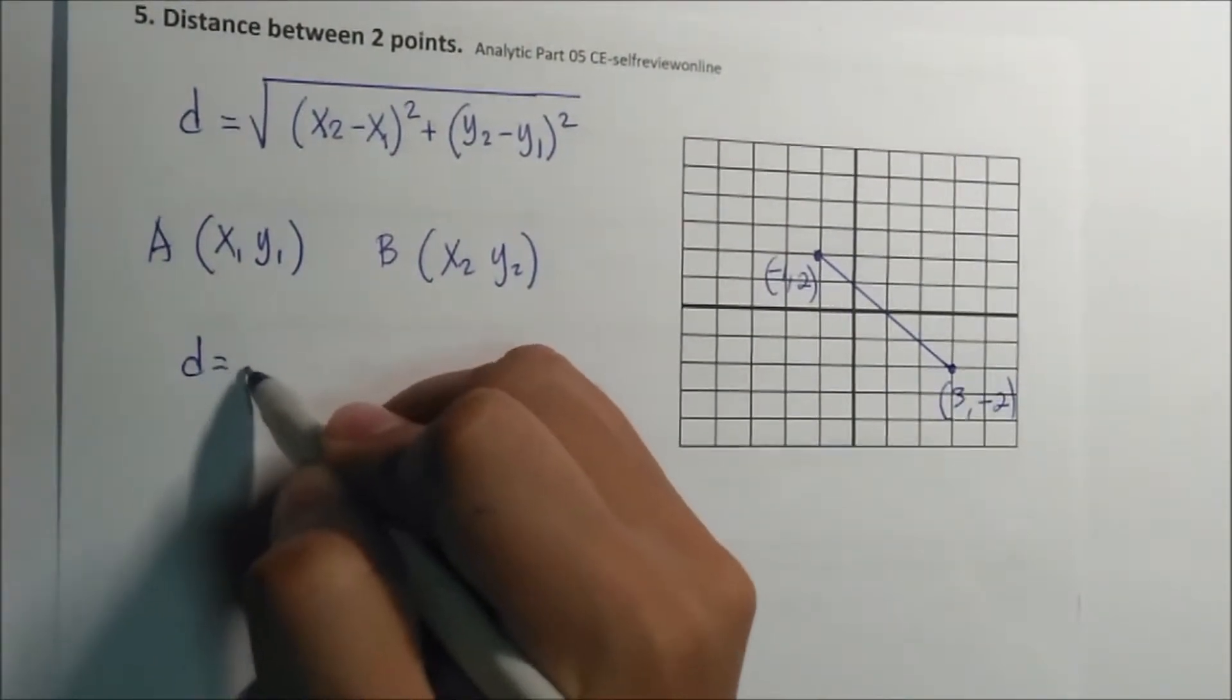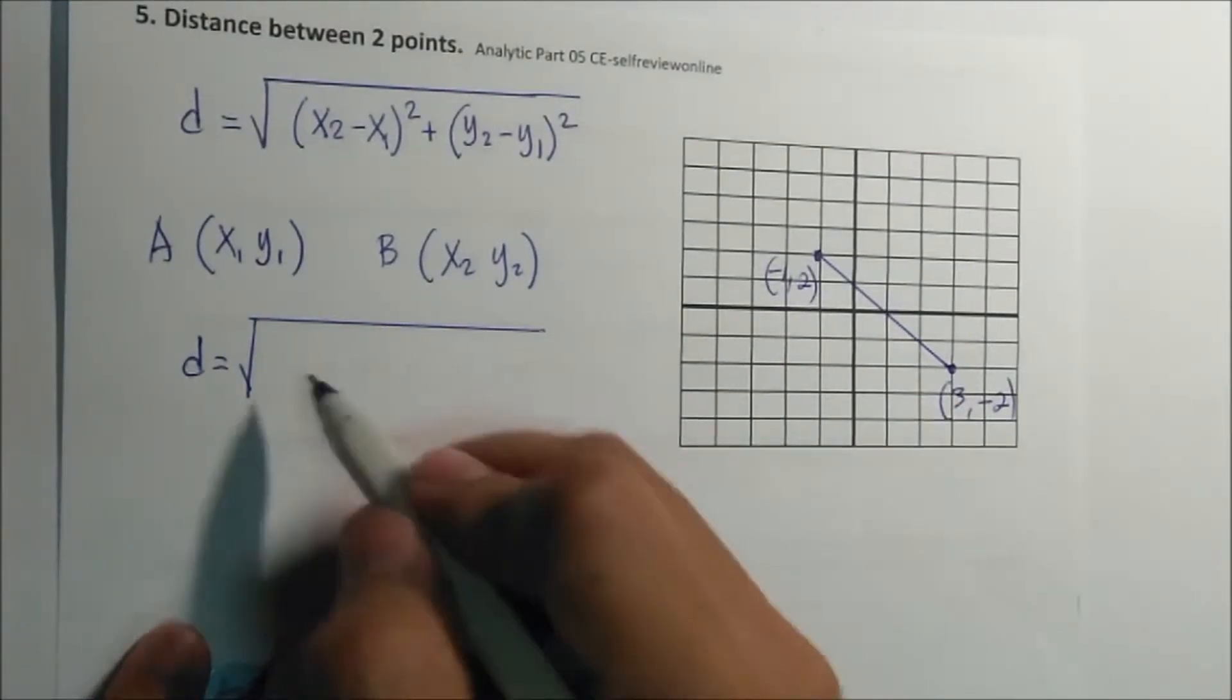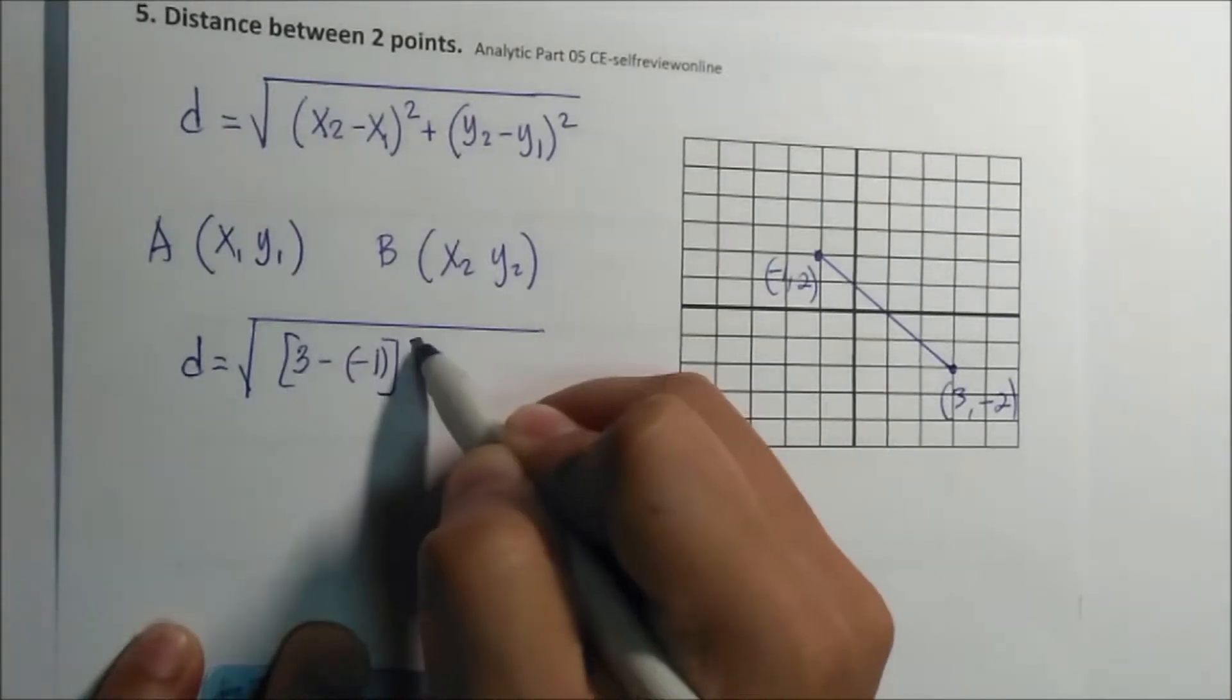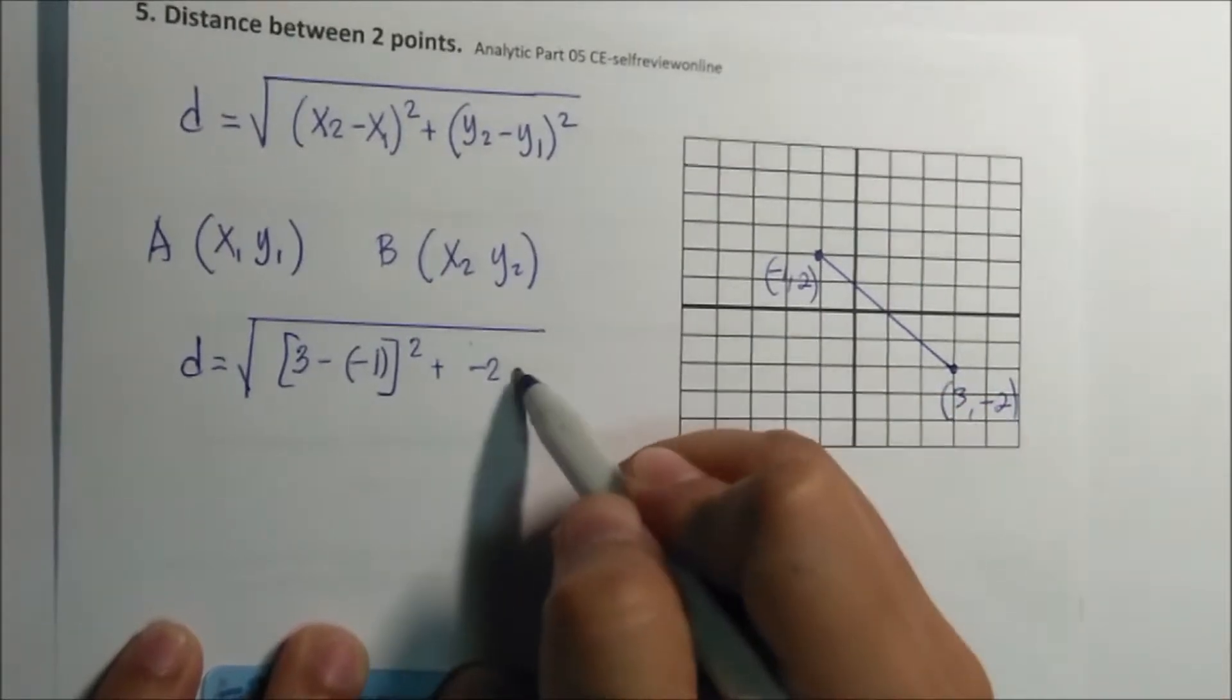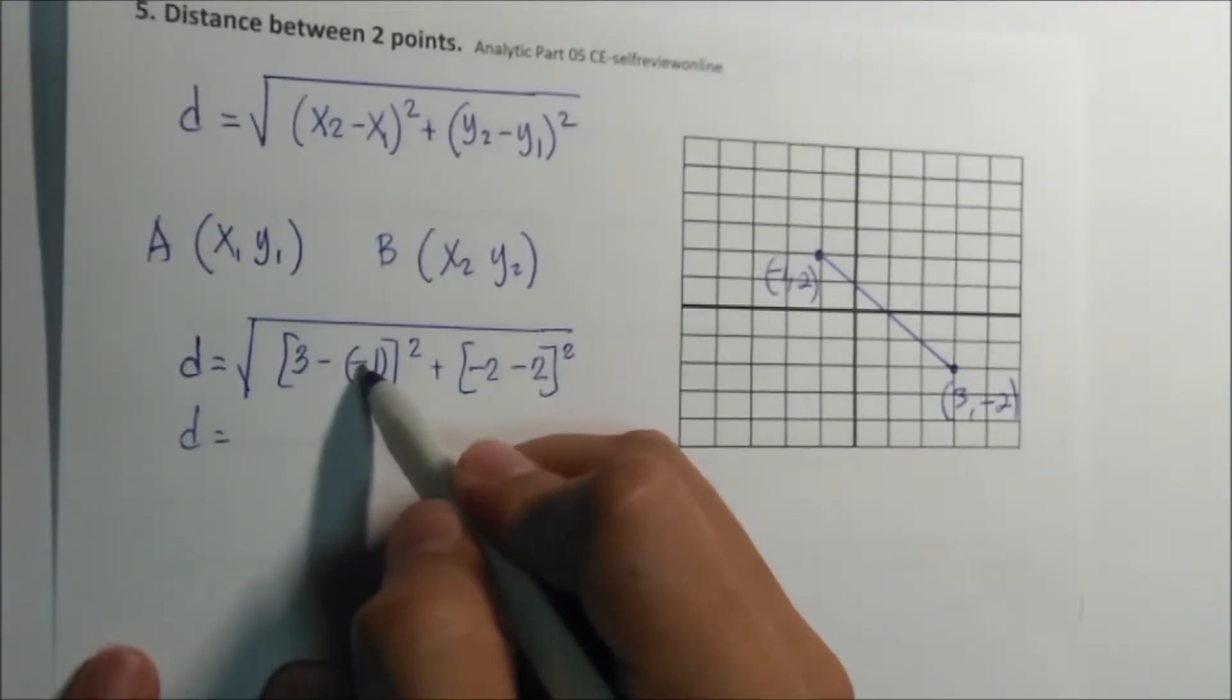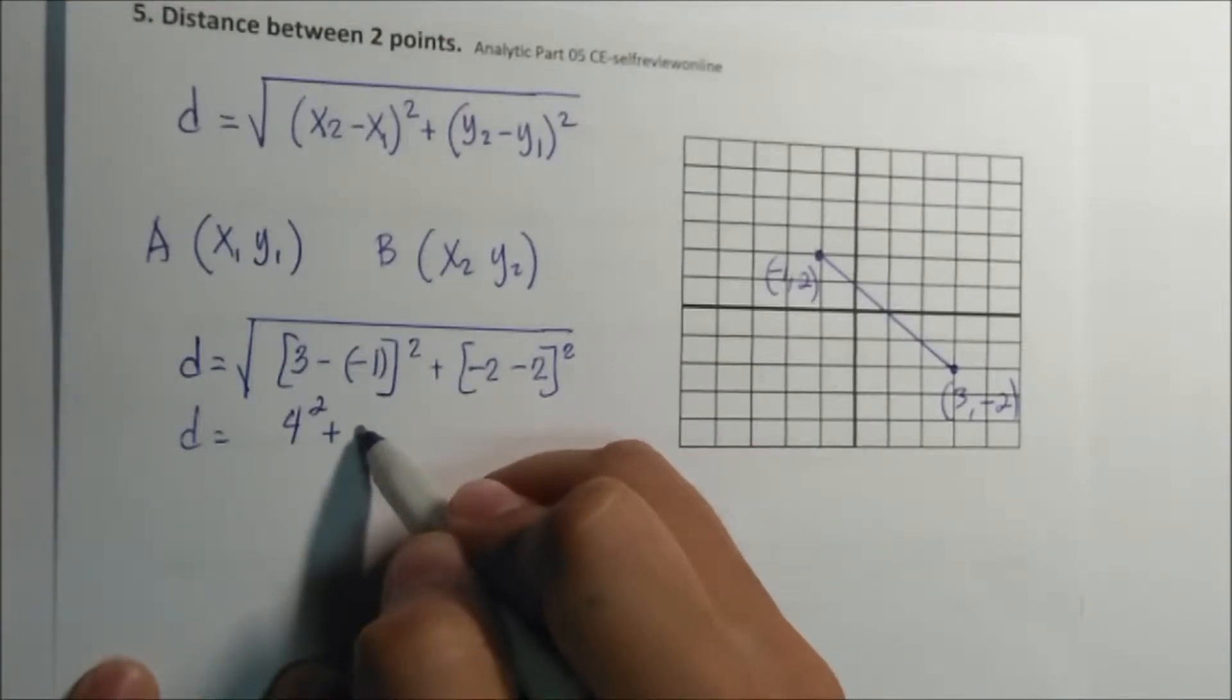So the distance is square root of x2 minus x1. Say for example, this is x1 and this is x2. x2 minus x1 minus minus 1 squared plus y2 minus 2 minus positive 2 squared. Distance is equal to minus minus that is plus, so 3 plus 1 that is 4 squared, plus minus minus that is plus 4 squared.